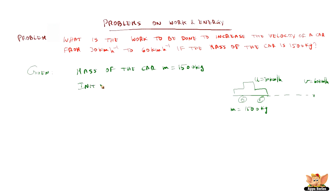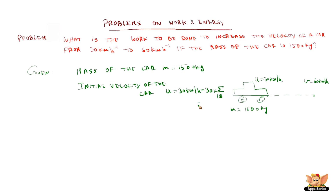The initial velocity of the car, u, is equal to 30 km per hour, which we need to convert into meters per second, since in the work done formula we need this unit as meters per second. So this becomes 30 into 5 by 18, which on cancellation gives 150 by 18, equal to 8.33 meters per second.